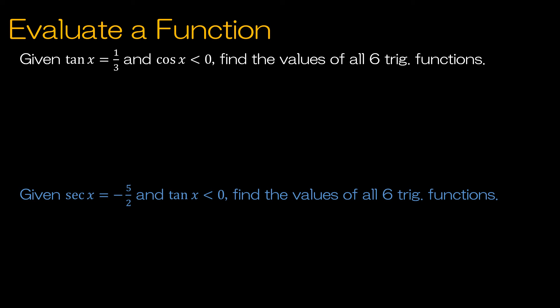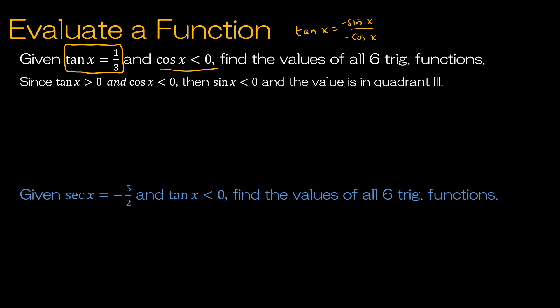We'll start with evaluating a function. We're not given what x is equal to; instead we're given that tangent of x equals one-third and cosine is less than zero. Since tangent equals sine divided by cosine, and tangent is positive but cosine is negative, sine must also be negative, placing us in the third quadrant. The easiest function to find is cotangent, which is the reciprocal of tangent — simply flip one-third to get three.